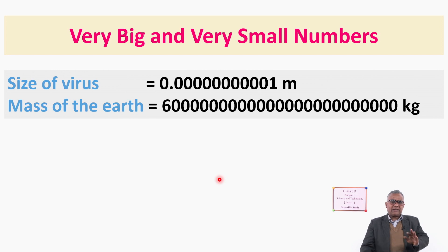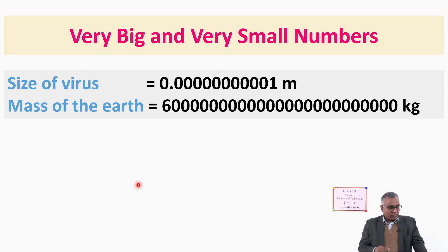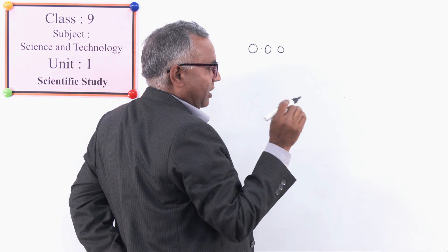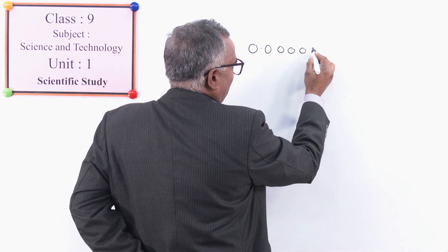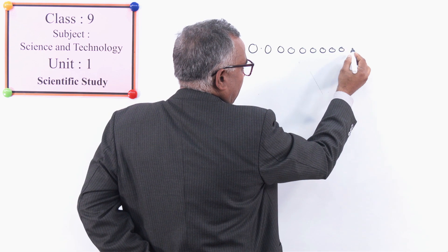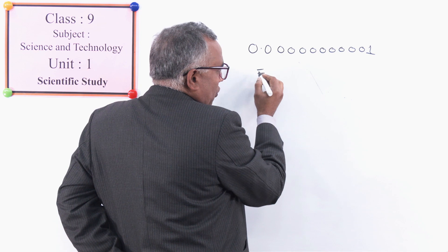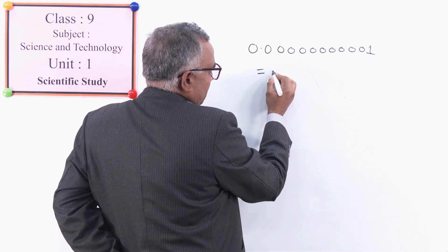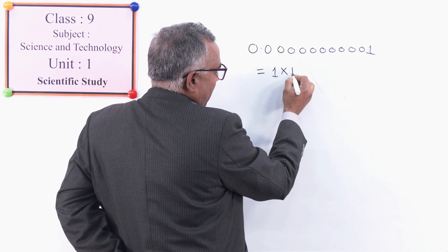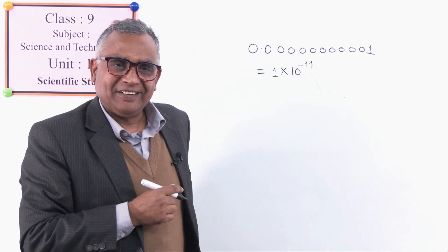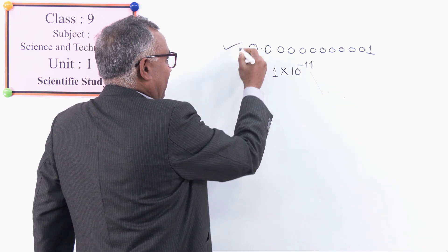We can show these numbers in a very short form. For example, the size of the virus — after the decimal you can count 10 zeros and then 1. You can write it very easily as 1 × 10⁻¹¹. Now just compare — which one is easier to read, the upper one or the lower one? Which one takes less time to write?